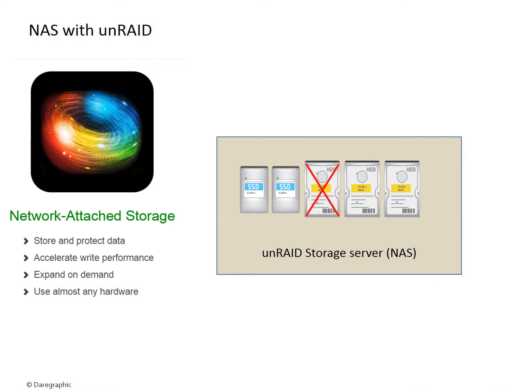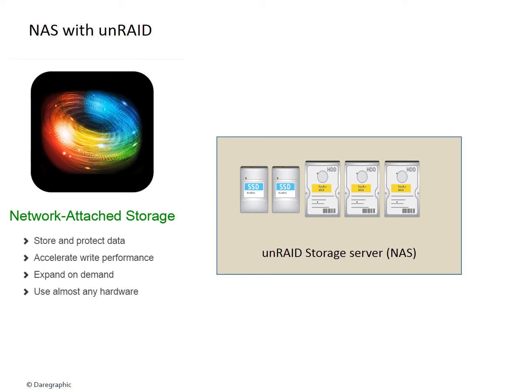Hotswap. Hotswap is a method of removing and replacing a hard disk without the need to stop and shut down the operating system. For example, Windows and Mac OS are operating systems that are not designed to support hotswap of hard disk. Windows servers on the opposite support hotswap, as well as Unraid and most NAS systems. It is very convenient when a hard disk fails to replace it without having to stop the users.